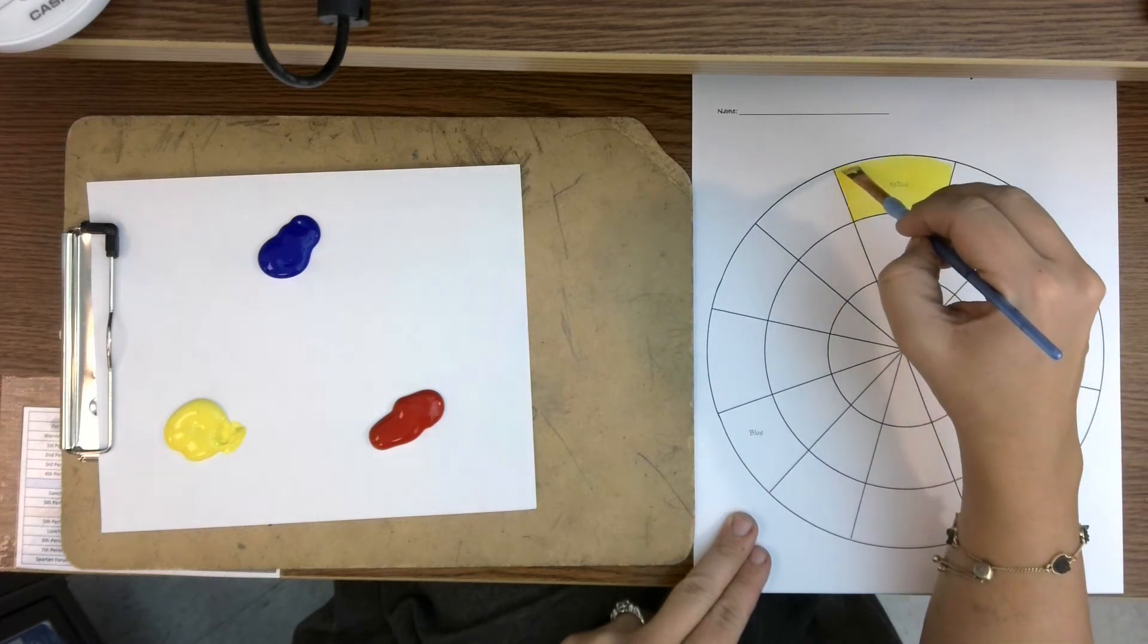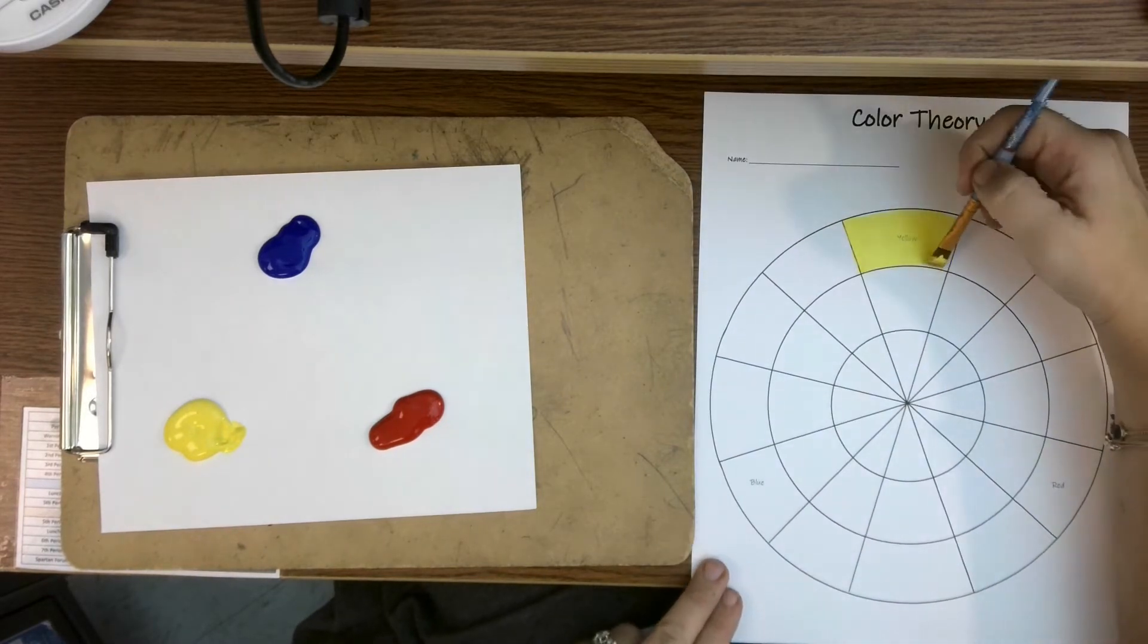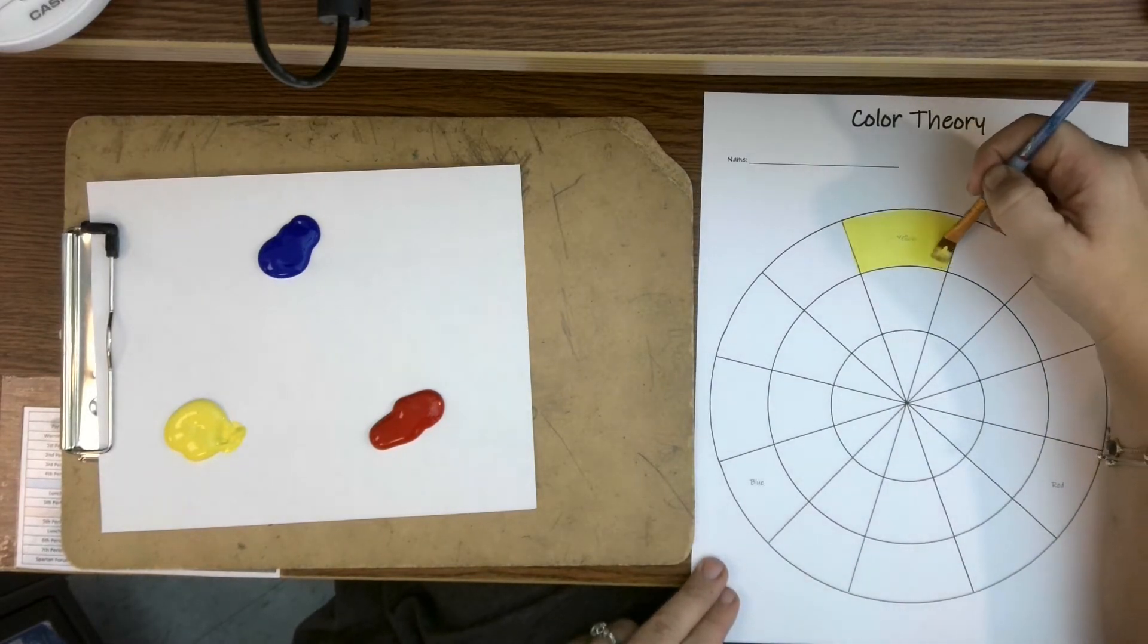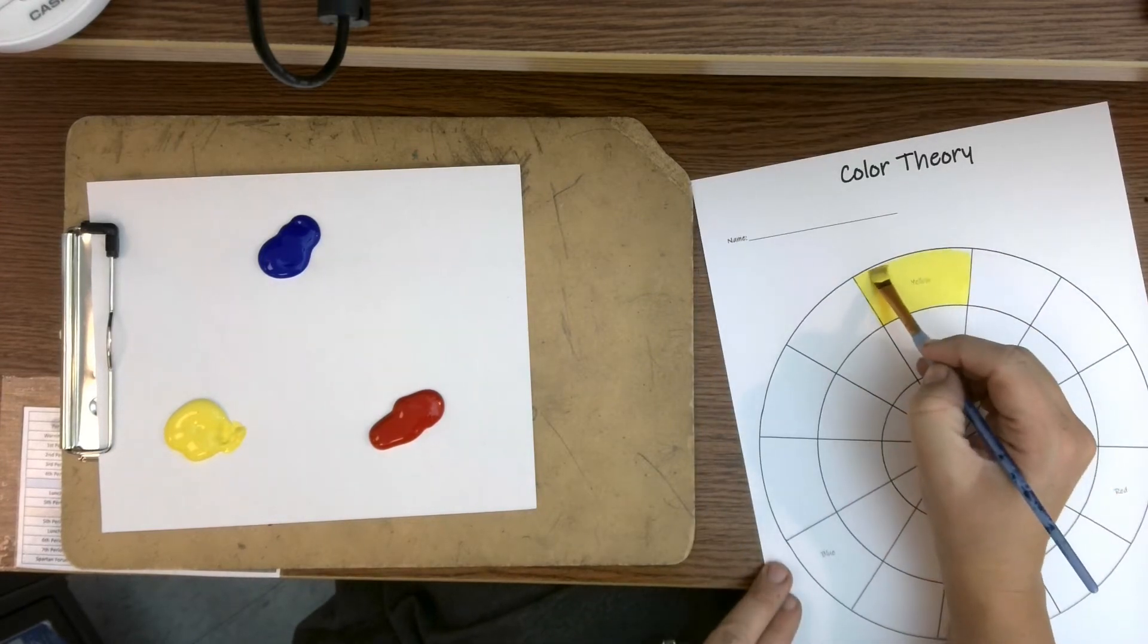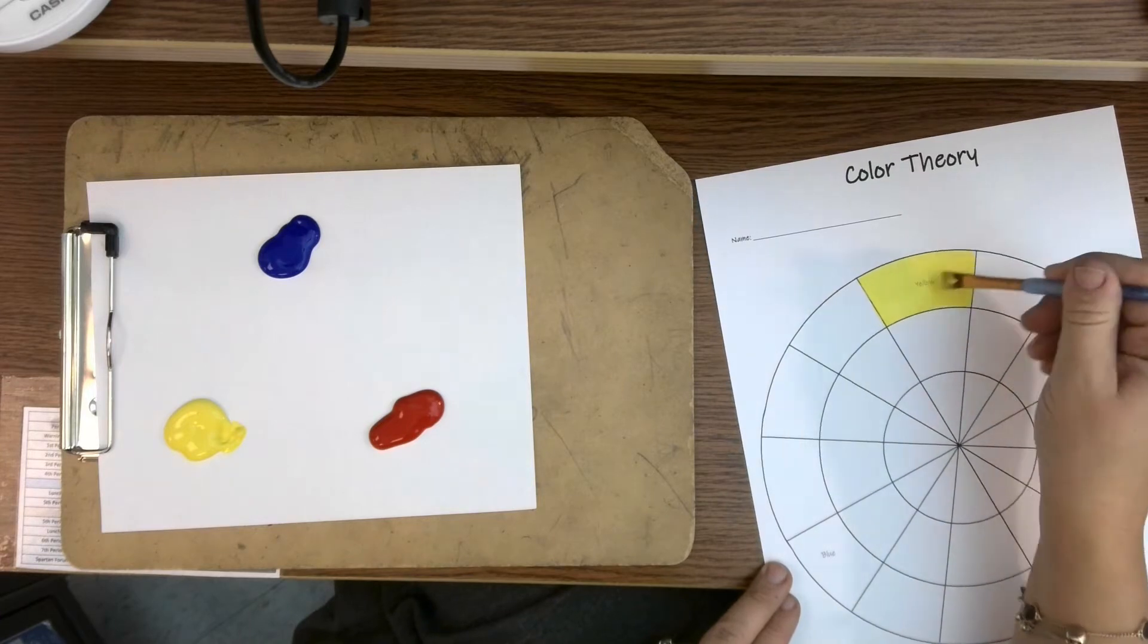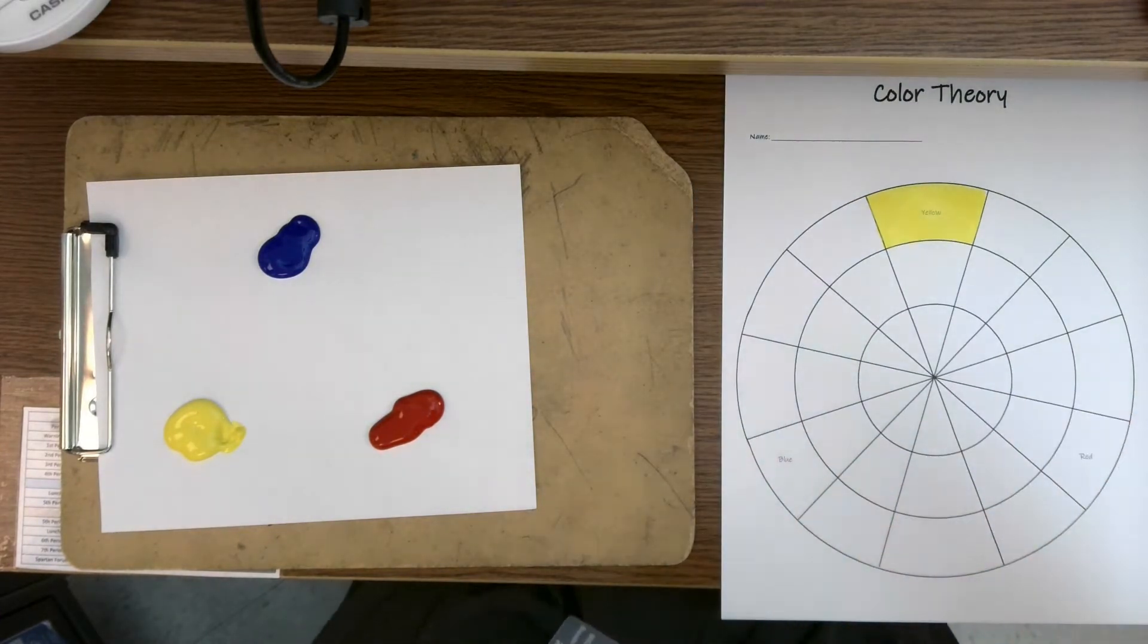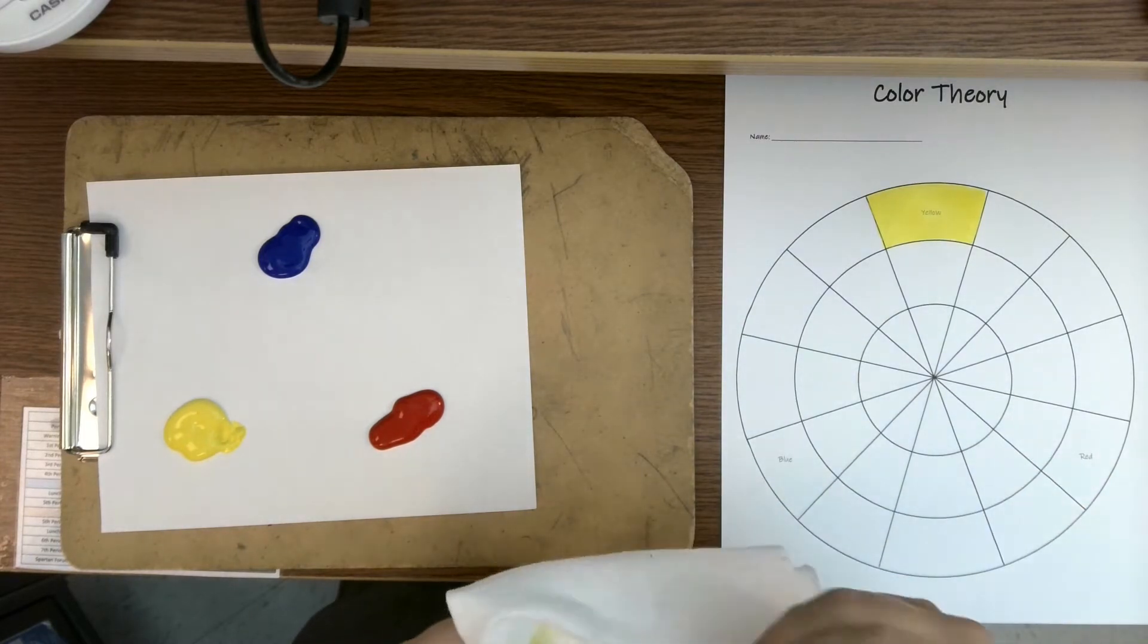In theory it's easy. With paint it can be more difficult because first of all we talked about brush control, trying to maintain our brush control to paint within our sections. Okay, I am not going to have the best brush control in this painting because I'm talking and demonstrating and trying to go for speed here.